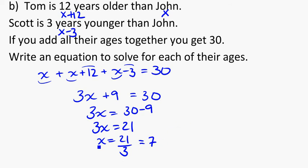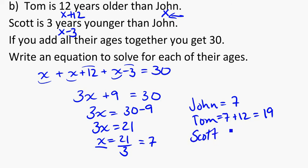So we know, because we said that x was equal to John, that John is 7 years old, that Tom is 7 plus 12, so he's 19 years old. He's 12 years older. And Scott is going to be 7 minus 3, because he's 3 years younger. So Scott is 4. And double-checking, 7 plus 19 plus 4 does in fact equal 30.